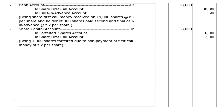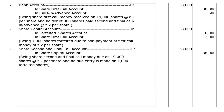Then second and final call due — it is clearly mentioned in the question that the final call was made after the forfeiture. Final call will be made on the balance shares: 20,000 shares were there, 1,000 could not pay, hence 19,000 paid. Share second and final call account debited to share capital account: 19,000 into 2 = Rs. 38,000, both debit and credit. Narration: being share second and final call money due on 19,000 shares at the rate of Rs. 2 per share. No due entry is made on 1,000 forfeited shares — 1,000 into 2 = Rs. 2,000 hence excluded.